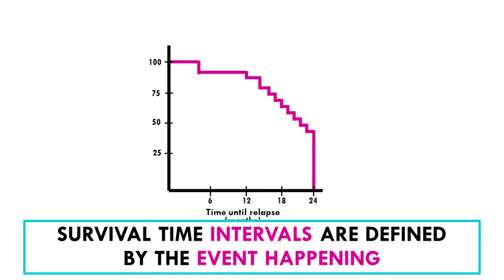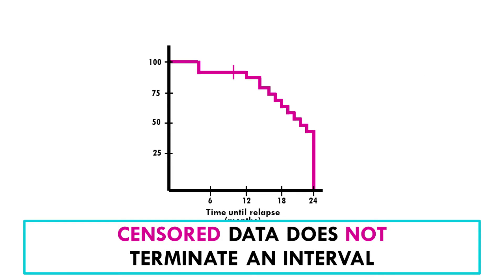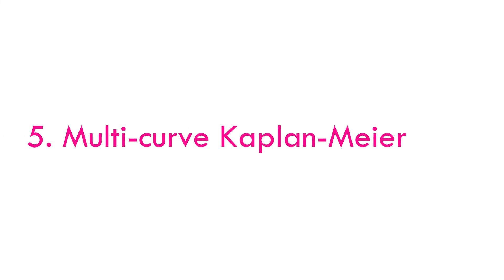So again, the survival time intervals are defined by the event happening, but what if we do not know if the event happened? What happens with censored data? As we saw in my previous video, censoring is used when we don't know if the event happened or not, for example if a patient dropped out of a study. What do we do with censored data? We represent it as tick marks. There will be tick marks along our Kaplan-Meier curve and they represent patients that were censored. Since we don't know if the event occurred or not, we cannot terminate that interval, so we will not drop down a level, we will just add a tick mark.